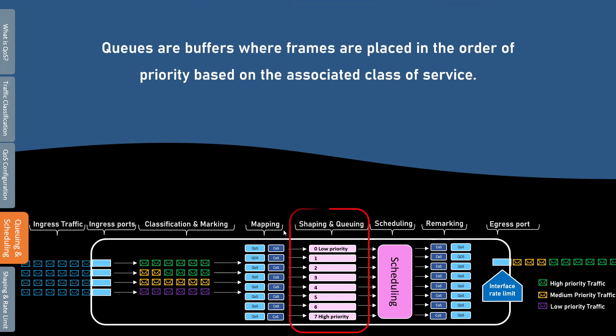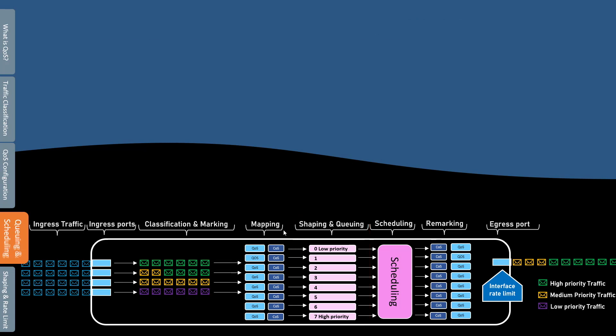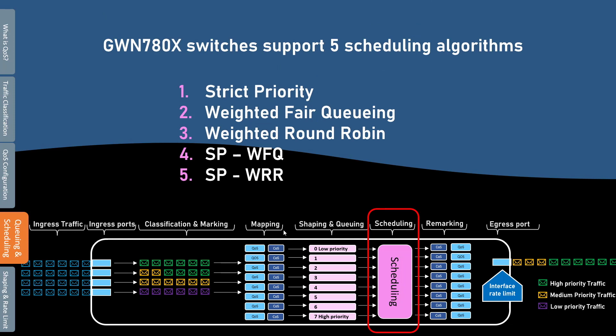After the traffic is classified and mapped to the switch internal forwarding class, it is placed in specific queues for scheduling. Every queue has an associated priority in which it is served. Queues are buffers where frames are placed in the order of priority before they are sent out through the outbound port. The GWN 7800 series supports 8 queues for each port, with Queue 7 having the highest priority. Scheduling is the process of servicing frames in the queues according to the scheduling method implemented in the switch, essentially choosing which frame should next be forwarded on the outbound port. GWN switches support 5 scheduling algorithms.